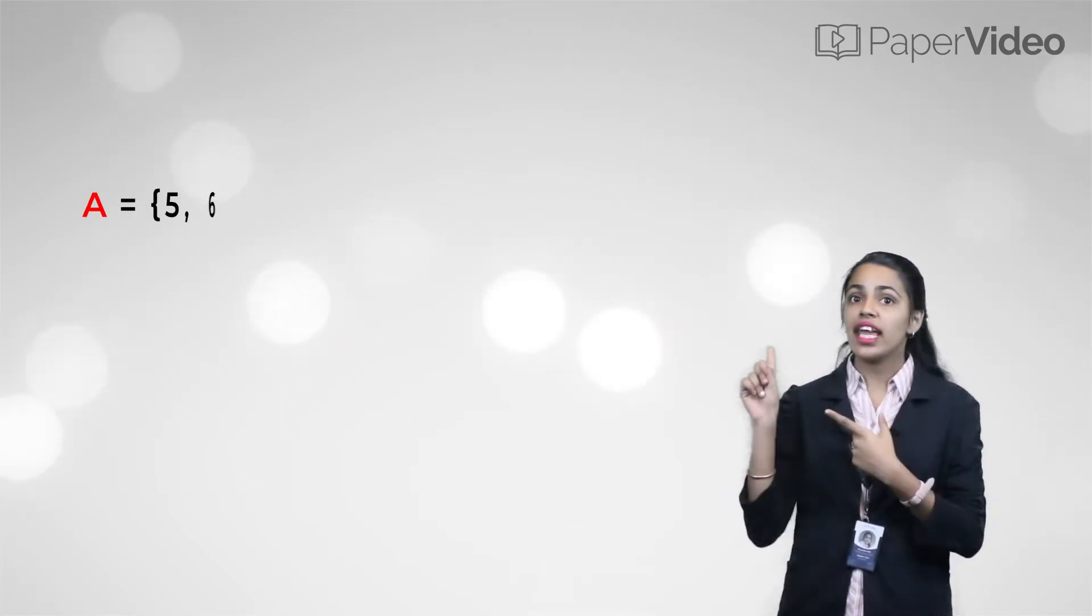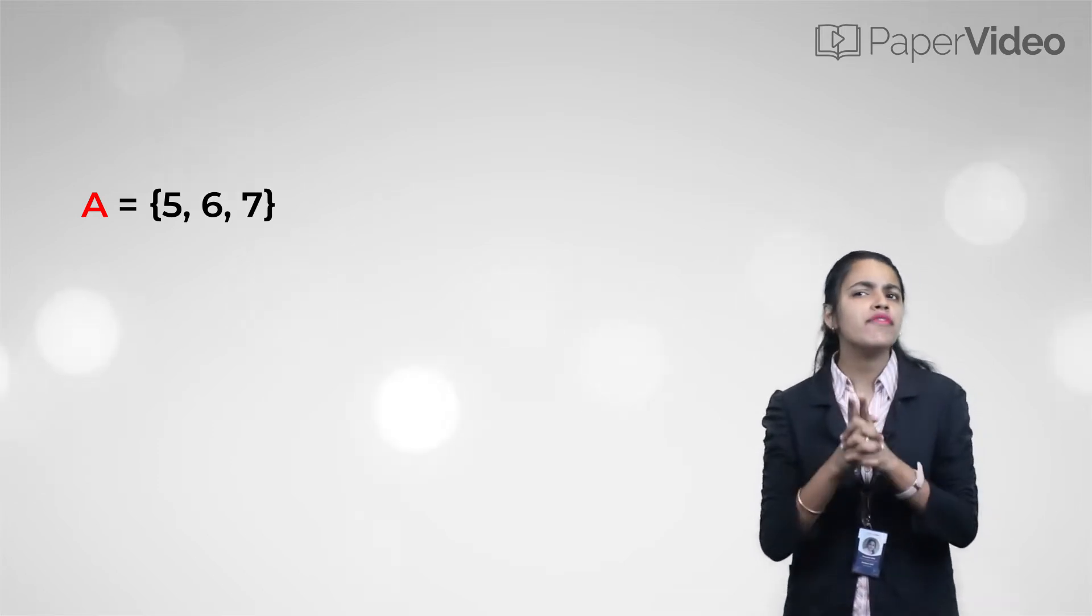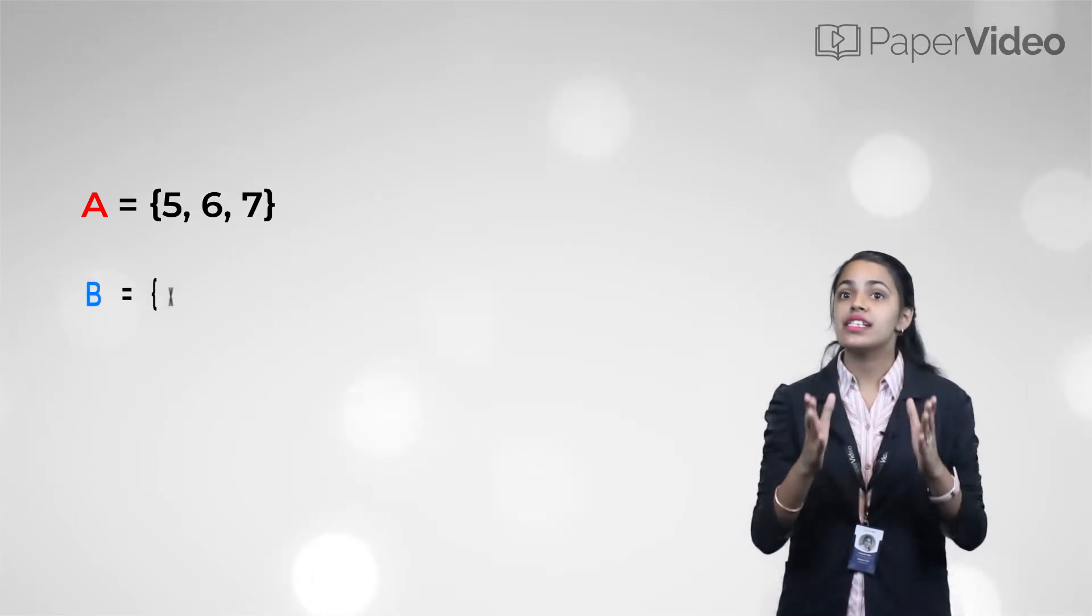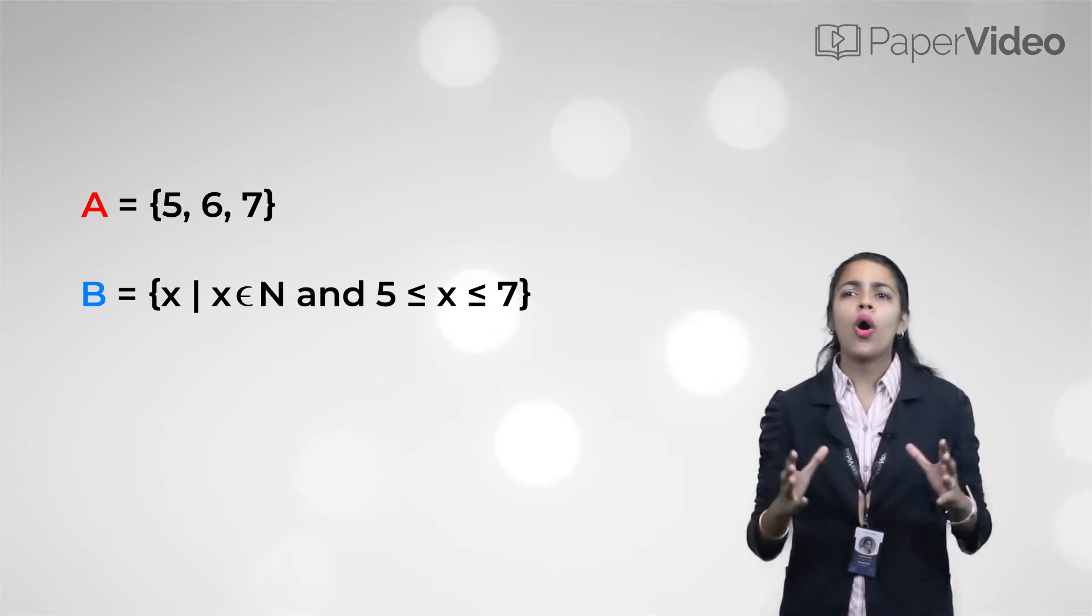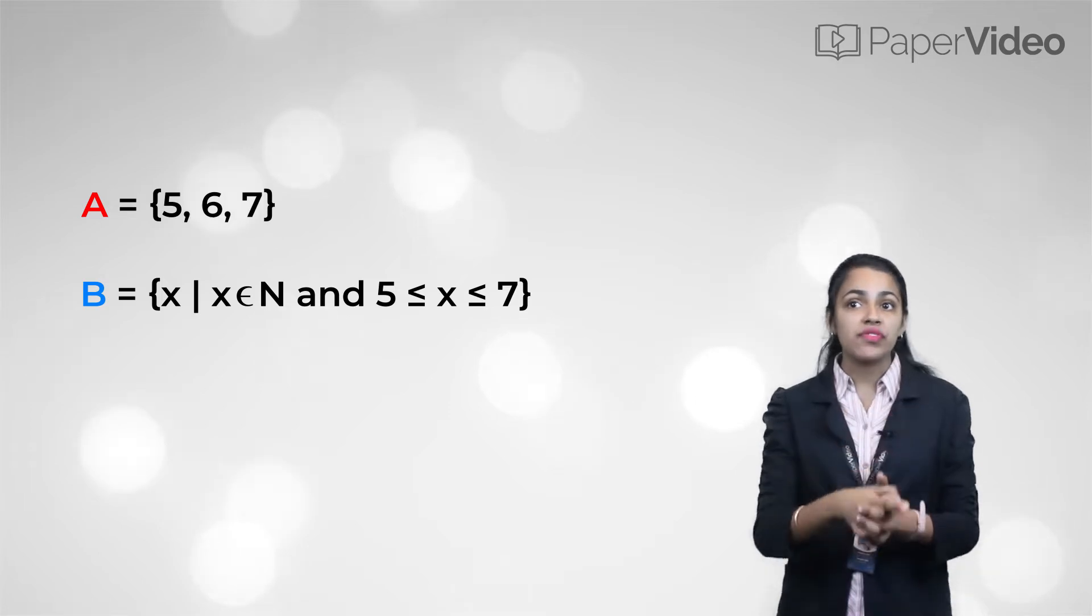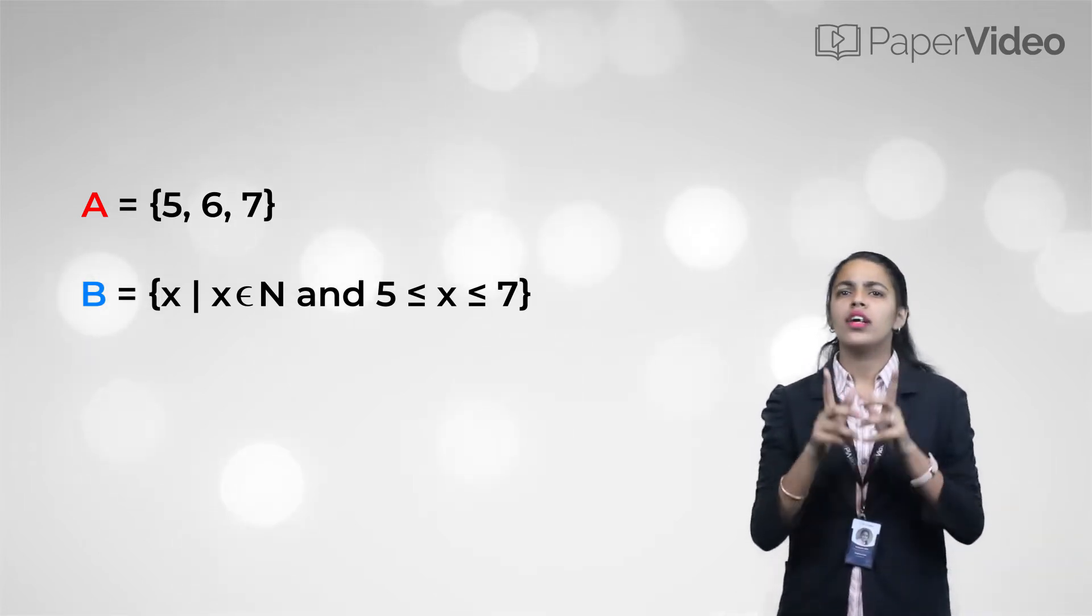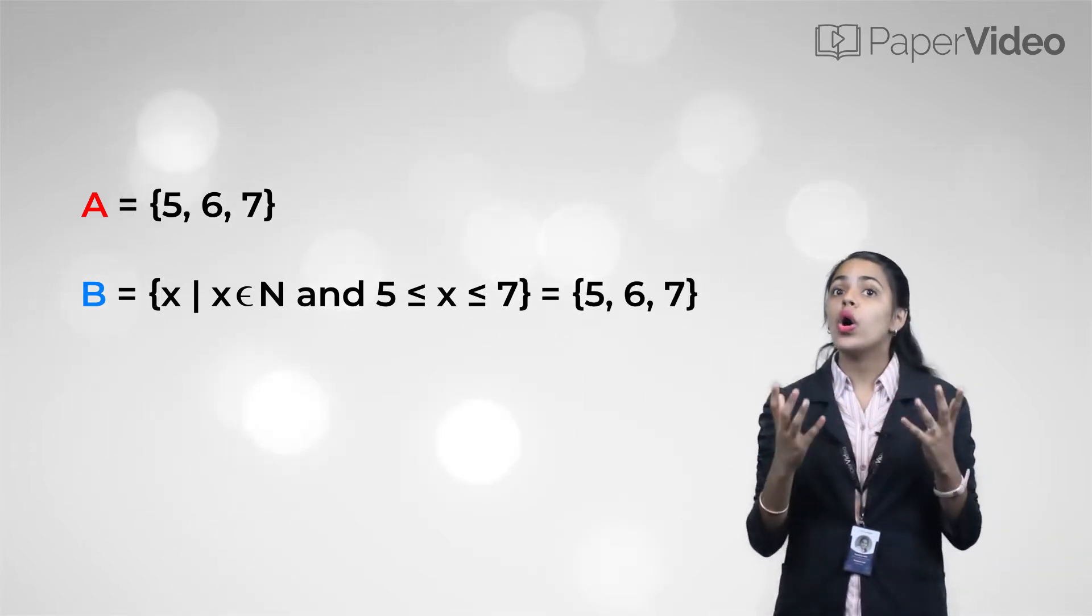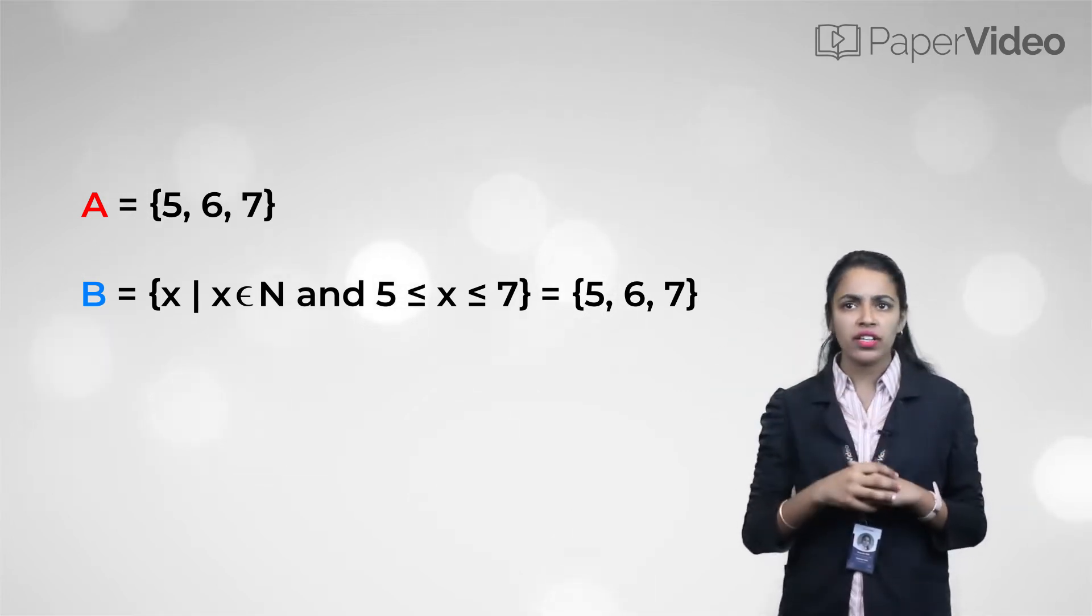For example, set A has elements 5, 6, 7 and set B is a set of all X such that X is a natural number and X is from 5 to 7. Then set B will also have elements 5, 6 and 7.